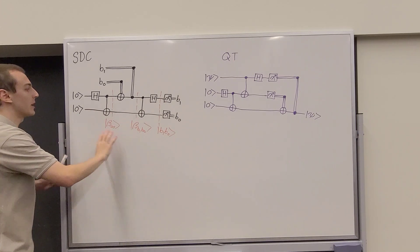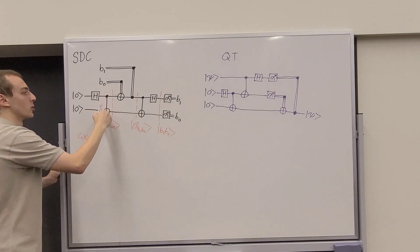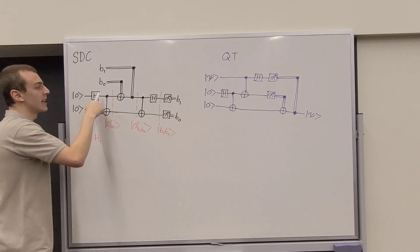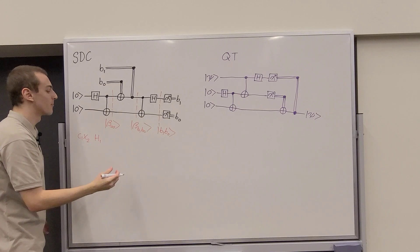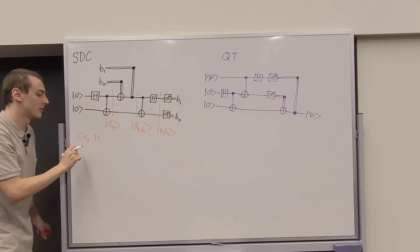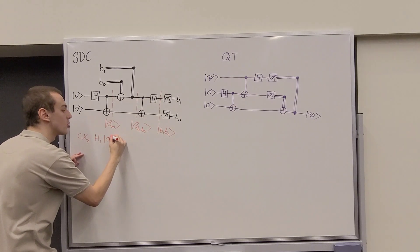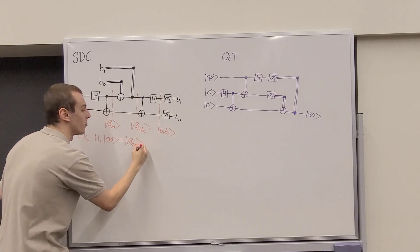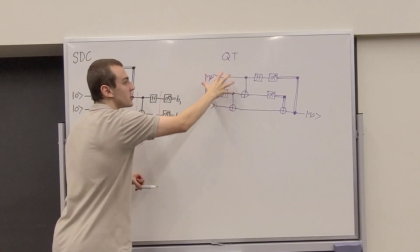Let's write this down as equations. The entanglement procedure is: C₁X₂ · H₁ acting on |0,0⟩ produces the Bell state β₀₀. Here H₁ denotes the Hadamard on qubit 1, which can also be written as H⊗I, and C₁X₂ is the controlled-NOT. This equation describes the entanglement step present in both the SDC and quantum teleportation protocols.